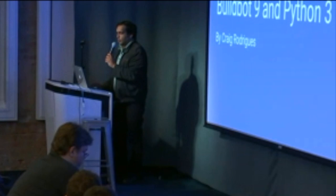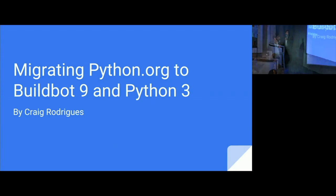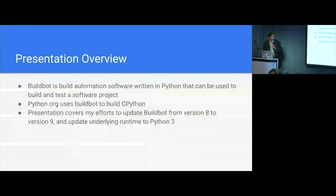The previous talk was actually very relevant to what I'm going to talk about, because I did a lot of open source work and extended a lot of my knowledge. I'm going to talk about migrating python.org to BuildBot 9 and Python 3. BuildBot is build automation software written in Python, and it's used to build and test software projects. Python.org uses BuildBot to build CPython — the actual Python binary itself — and test it when people make changes.